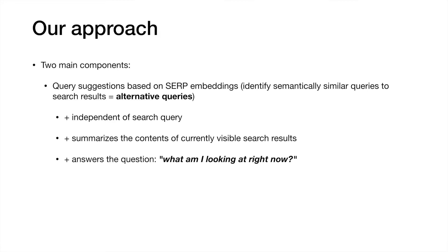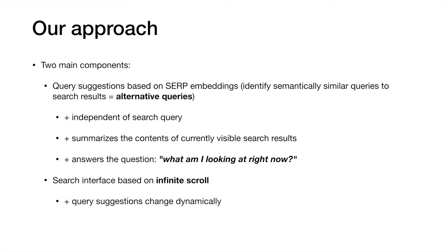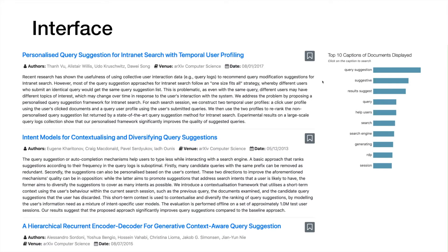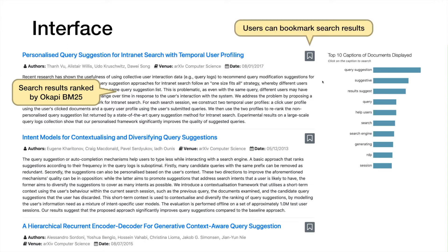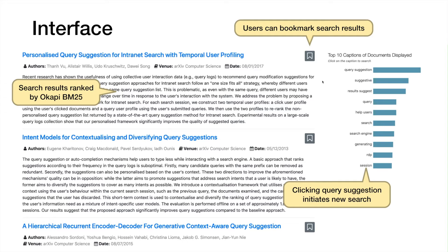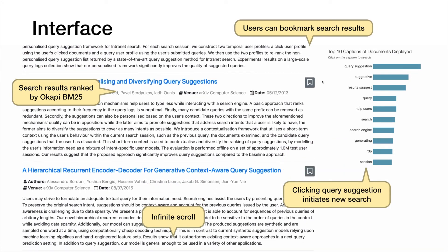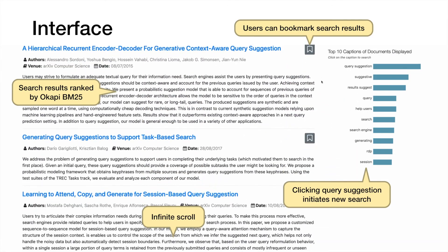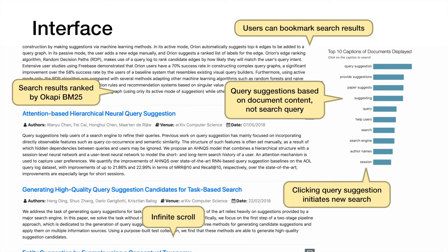We combined this query suggestion method with a search interface based on infinite scroll. This allows us to change the displayed suggestions dynamically, and users are then able to see where in the ranking search results start to become less relevant. Users initiate a search with a textual query and we retrieve search results ranked by Okapi BM25. Each document can be bookmarked and recalled later. The query suggestions are anchored to the right margin and can be clicked to initiate a new search. We implement infinite scroll by fetching additional results before the user reaches the bottom of the page and update query suggestions dynamically based on what documents are currently visible.